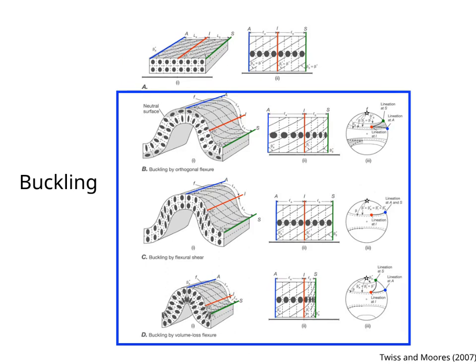Therefore, this initial strain before folding is superimposed to the strain produced by folding, due to either orthogonal flexure, flexural shear, or volume loss flexure.